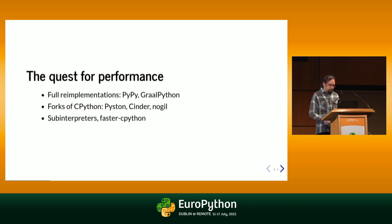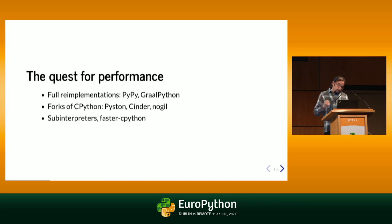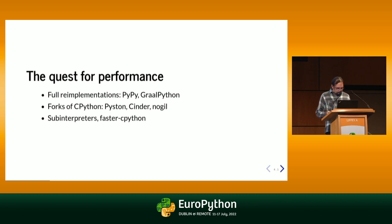Another way to improve performance is inside CPython itself. Nowadays there is a lot of focus on performance. You have the Faster CPython project, which tries to change the internals — but it's CPython, so they can't afford to break existing extensions. Another project to improve performance deals with concurrency, allowing several interpreters inside the same process — but that runs into issues with the C API as well.